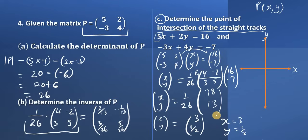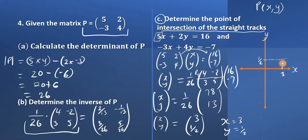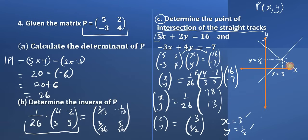What this means is that when the two straight lines cross each other, they cross at this point. So x is 3 on the x-axis and y is half on the y-axis — the two straight lines will actually cross at the point x equals 3 and y equals one half. One straight line passes through this point and another passes through this same point.